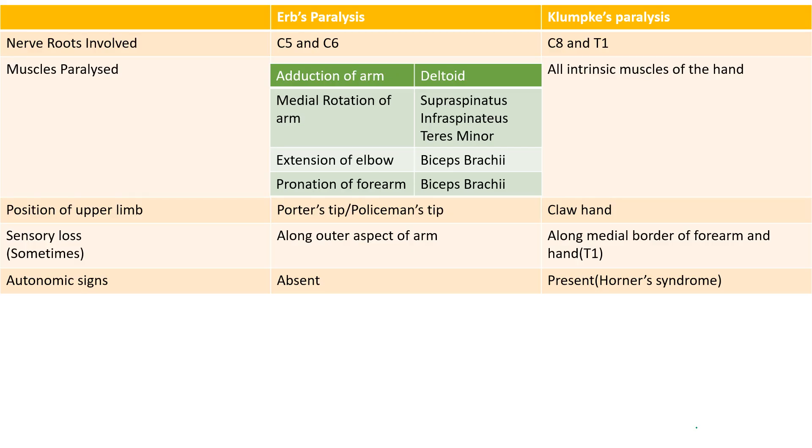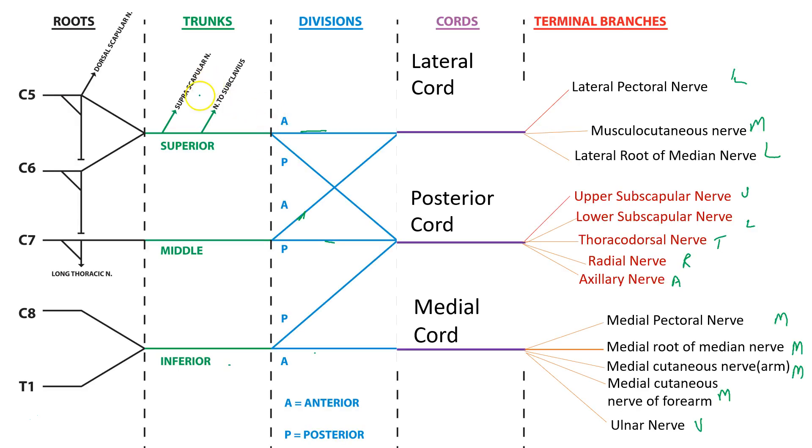So, coming to clinical correlation. Erb's paralysis. So, this point here, where there is the meeting point of the C5, C6 roots and the origin of the anterior and posterior divisions of the upper trunk, which also gives the nerve to subclavius and suprascapular nerve. This is called as Erb's point.